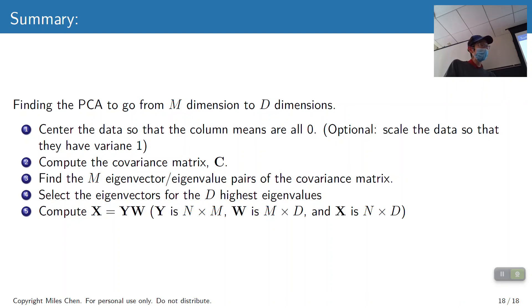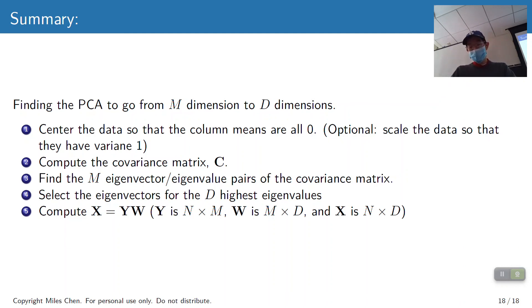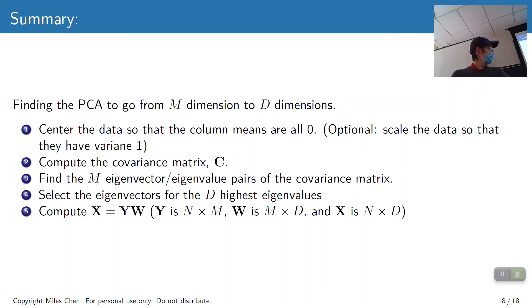This is a conceptual introduction. On Wednesday we'll look at actual examples of doing principal components analysis for the purpose of dimension reduction. The last view quiz answer is C, as in cat. Have a good day, see you Wednesday.